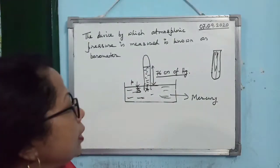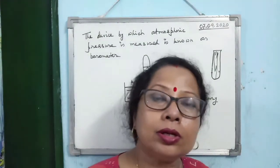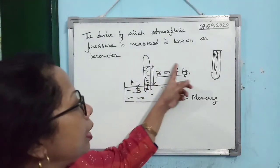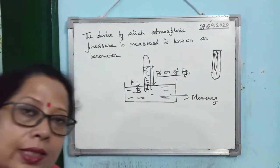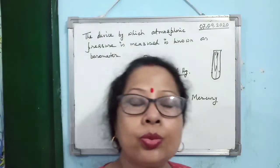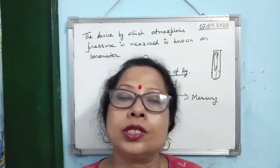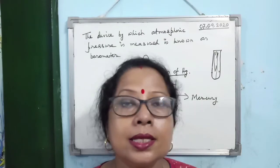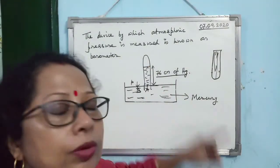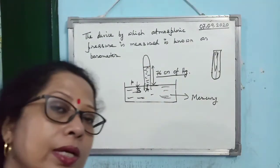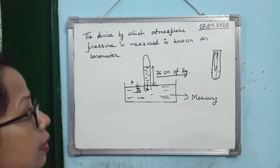If you take the barometer to a different altitude, the height of the mercury column changes. As we go to higher altitude, atmospheric pressure decreases, so the height of the mercury column decreases.